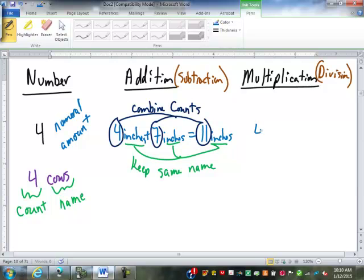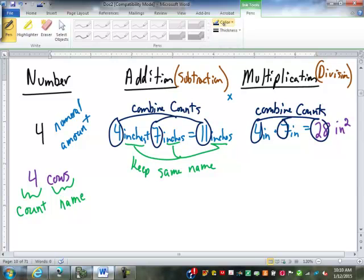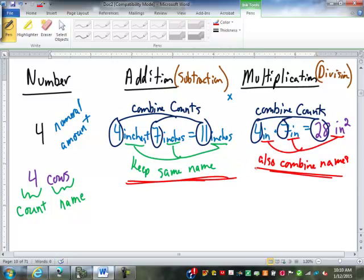Well, let's look at multiplication. Four inches times seven inches is going to give us 28, not inches, but inches squared. When we multiply, if you look at the counts, four times seven gave us 28. We still combine the counts. But the difference is right here. We had inches and inches, and it became inches squared. When we multiply, we also combine the names.